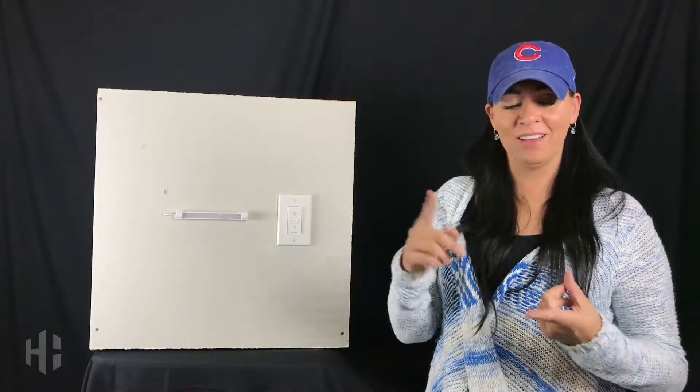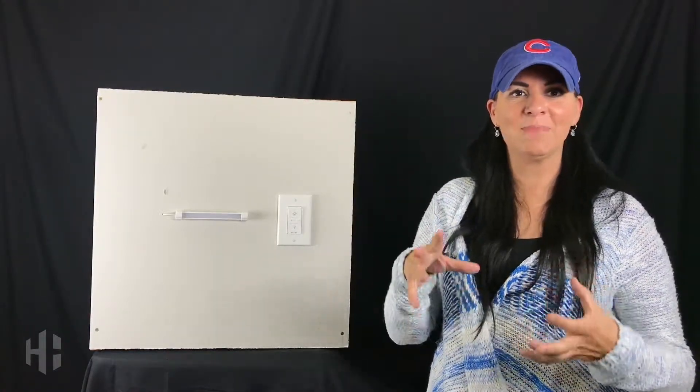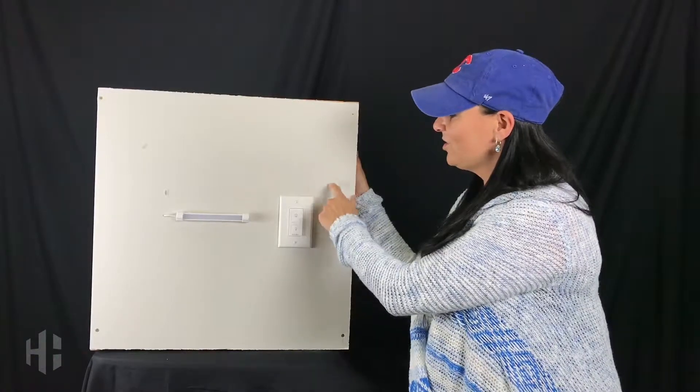Super easy, there are three buttons: on, off, and your dimming capability. You see that it's installed on our wall.